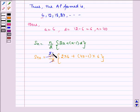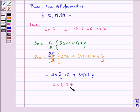S_40 = 20[12 + 39 × 6] which is equal to 20 multiplied by 12 plus 234.